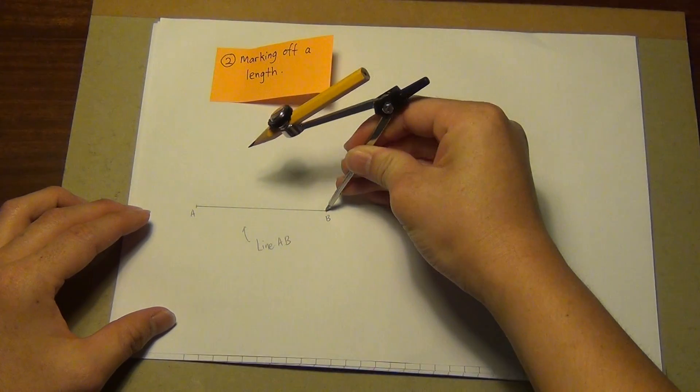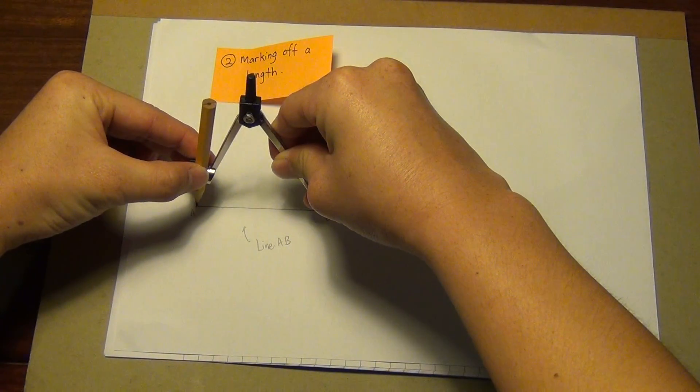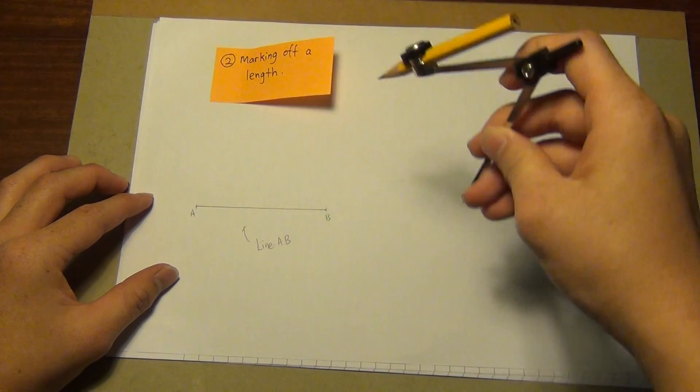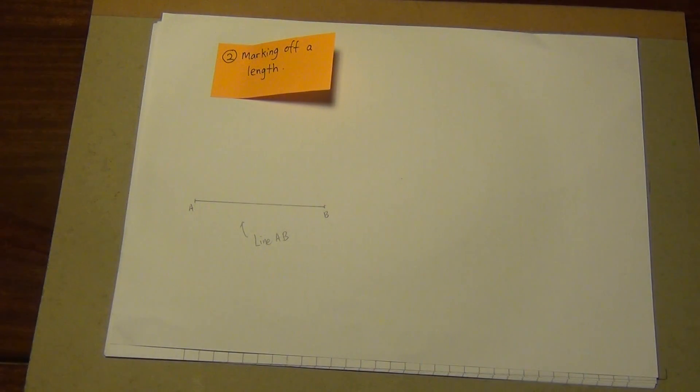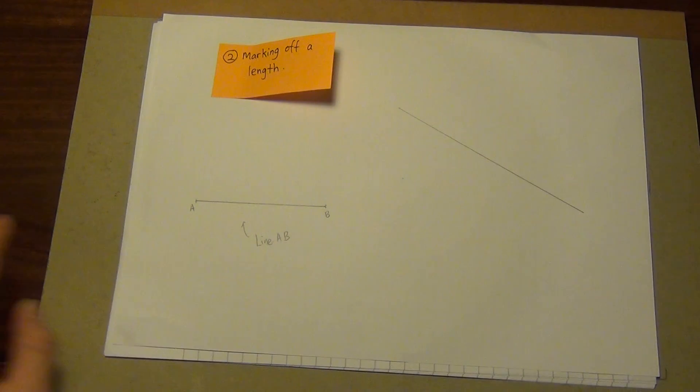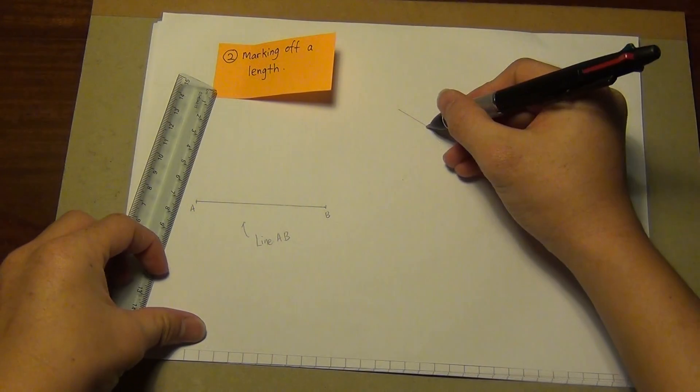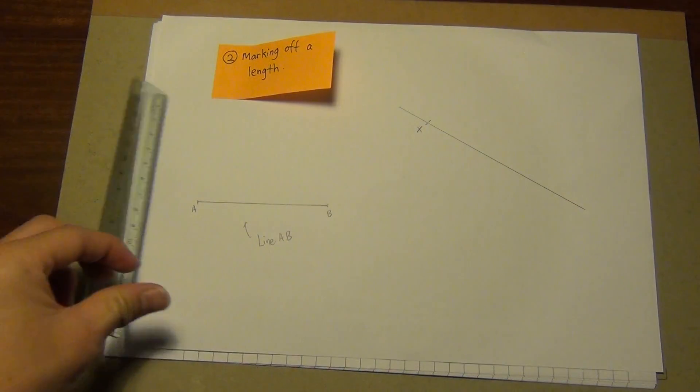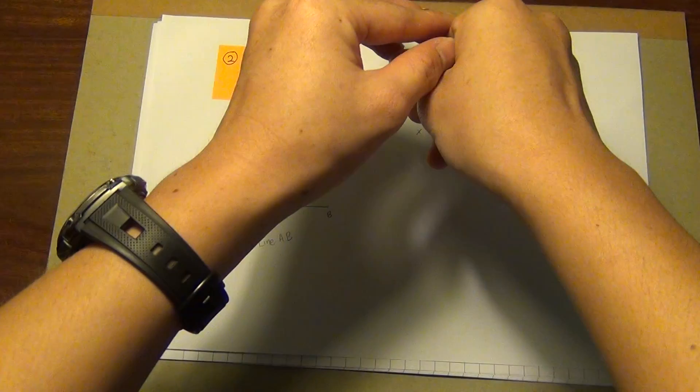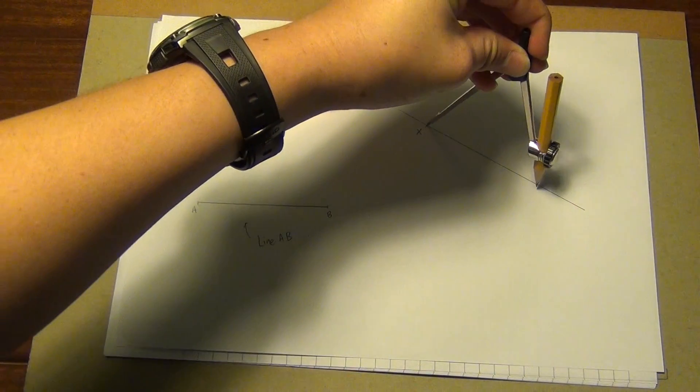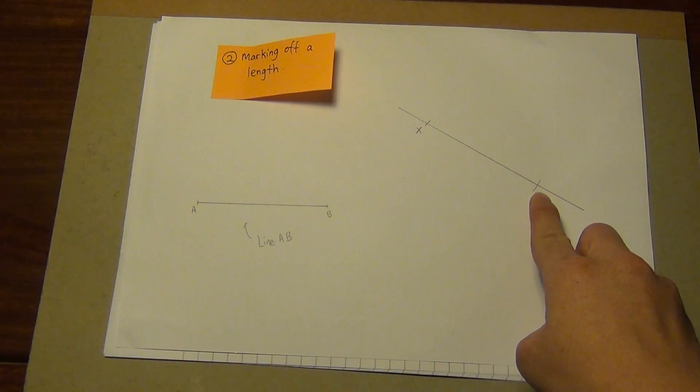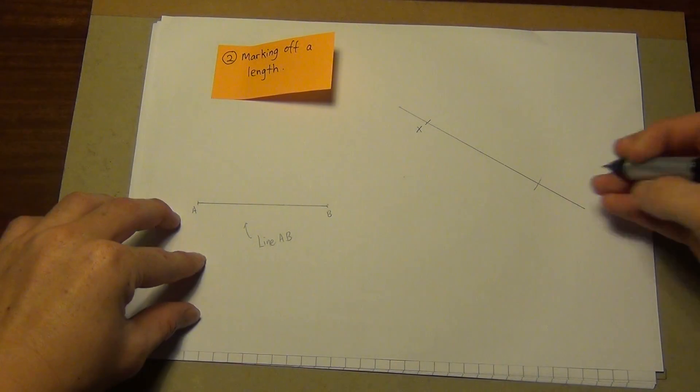First take the pointed end and the drawing end. I'll mark off the length of AB. Then I will transfer this onto another line. Here, I'll put a point, let's say here as X. I will start with my pointer end onto X and mark off a line here so that I will get an intersection. I'll label this point here as Y.